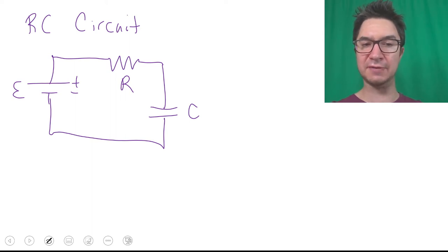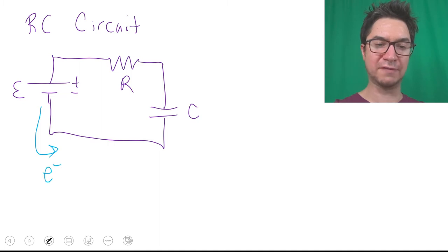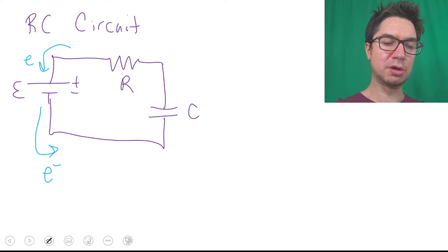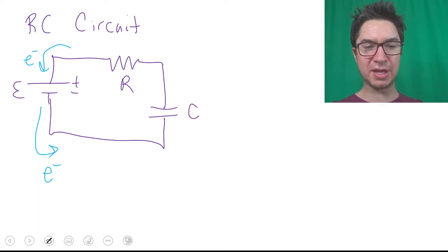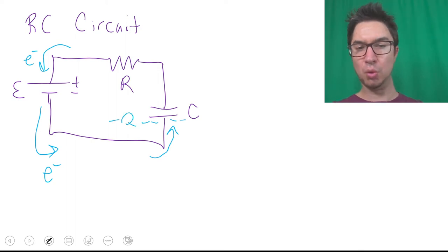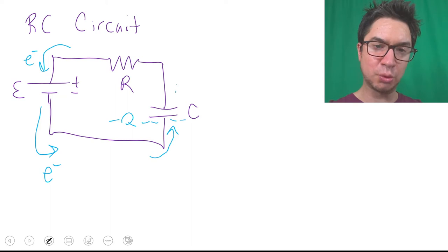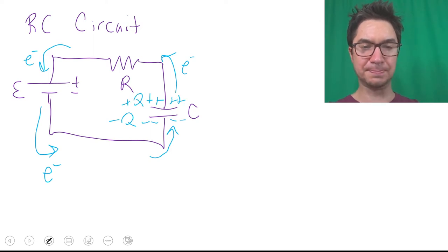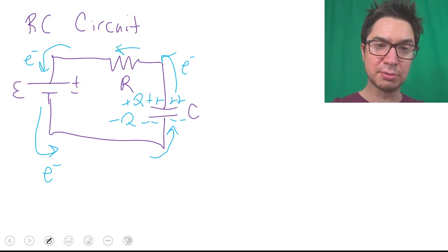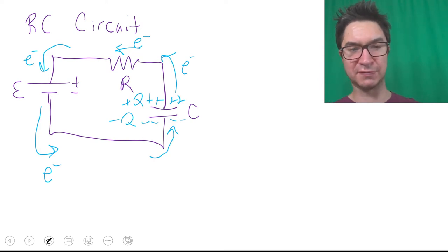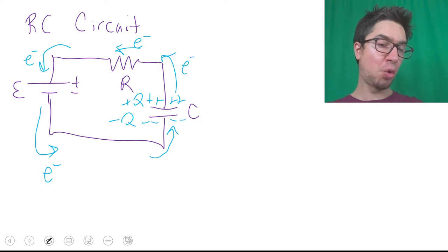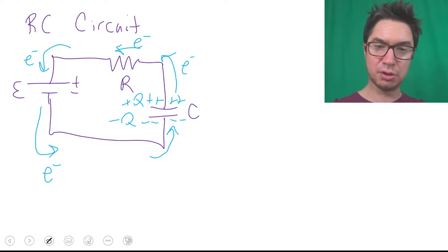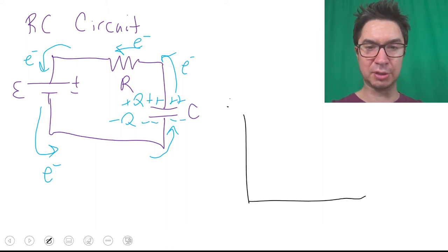Electrons will be repelled away from the negative terminal of the battery, so electrons flow away from that negative terminal and likewise flow toward the positive terminal. When electrons flow away from the negative terminal they collect on the negative plate of the capacitor, building up a charge of negative Q. When all that negative charge builds up, electrons in the wire get away from it, leaving a net positive charge of plus Q on the other plate. Electrons then flow through the resistor and are attracted to the positive terminal of the battery.